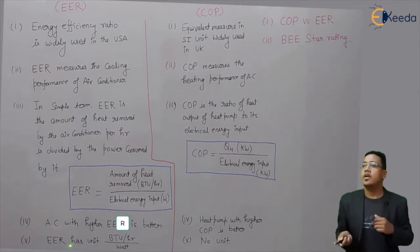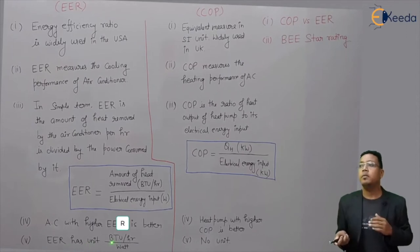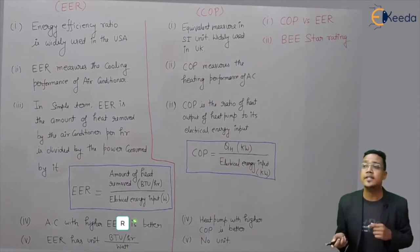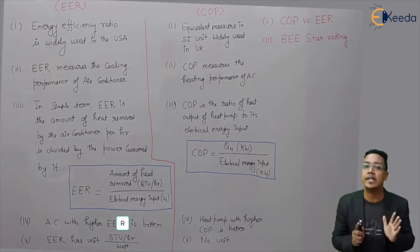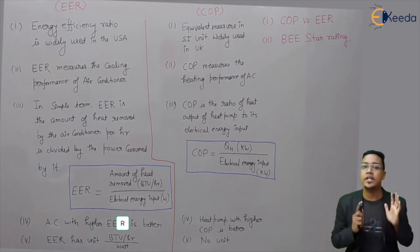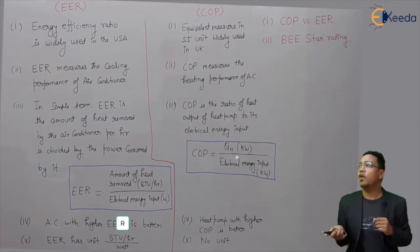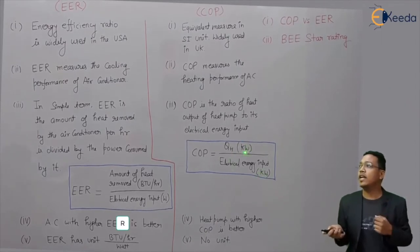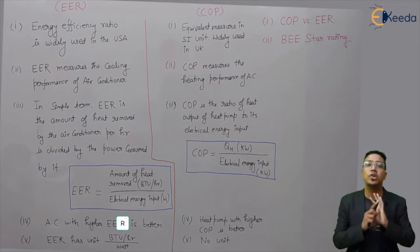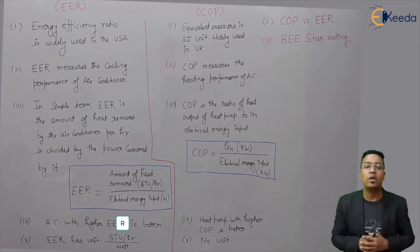EER has a unit: BTU per hour per watt. EER is not unitless. COP, on the other hand, has no unit — the kilowatt units cancel out, so COP is dimensionless.